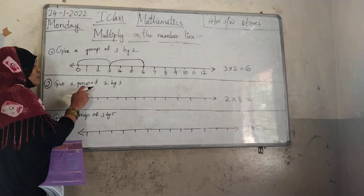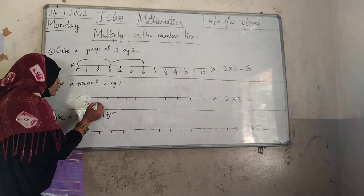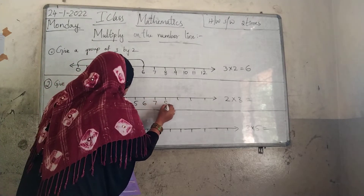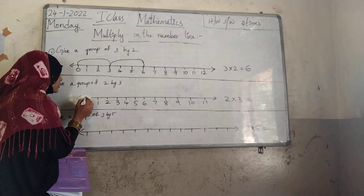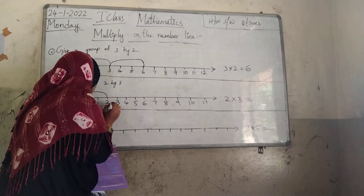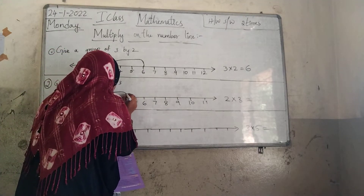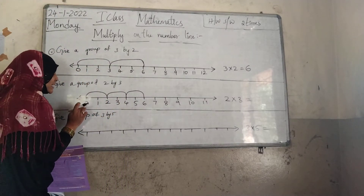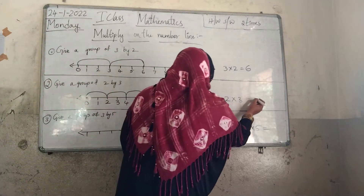Next, give a group of 2 by 3. 2 by 3 means we have to count 2 — how many times? 3 times. The numbers are: 0, 1, 2, 3, 4, 5, 6, 7, 8, 9, 10, 11. We count 2 three times: 0 to 2 is 1 time, 2 to 4 is 2 times, 4 to 6 is 3 times. What is the answer? 2 into 3 is equal to 6.